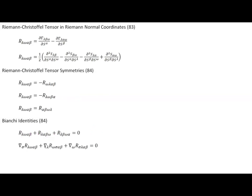The second Bianchi identity is similar to the first, except we rotate the covariant-derivative index with the last two indexes cyclically — when we add those three permuted forms together, we get zero. In some literature it's expressed with this index permuted with the last two in each case; because of the pair-swap symmetry, the two forms are equivalent. These are two very important relationships we'll make use of in future videos.